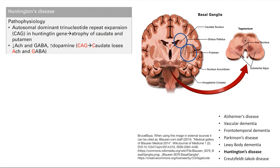Huntington's disease is another cause of dementia. It's due to trinucleotide repeat expansion of CAG in the Huntington gene, which leads to atrophy of the caudate and putamen — parts of the basal ganglia. It's characterized by changes in neurotransmitter levels: decreased acetylcholine, decreased GABA, and increased dopamine. A super easy mnemonic: CAG — Caudate loses ACh and GABA. This tells you the location and the neurotransmitter changes.